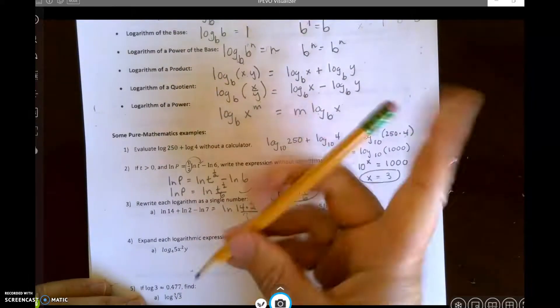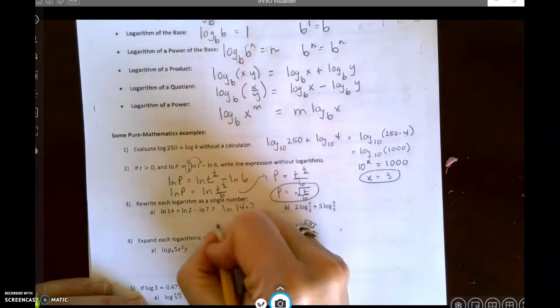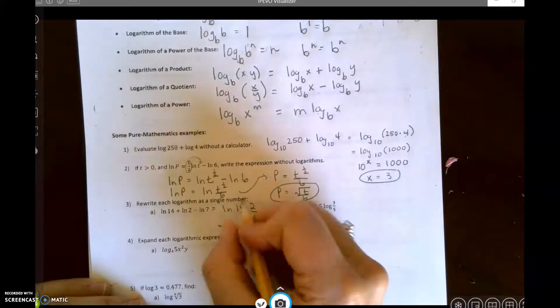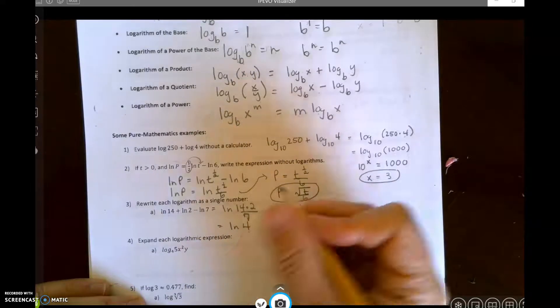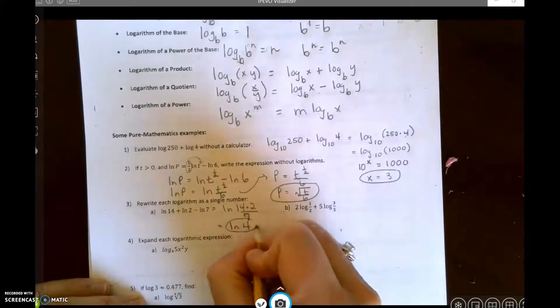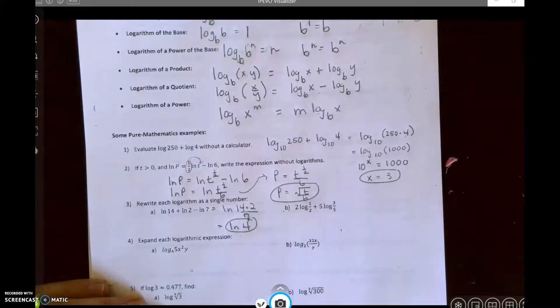So I would have the natural log of 14 times 2 divided by 7. So I get the natural log of 14 times 2 is 28, 28 divided by 7 is 4. And there's my final answer.